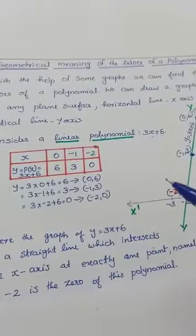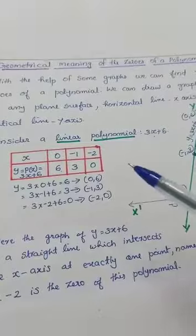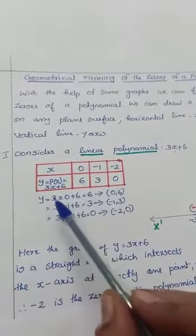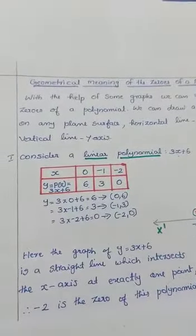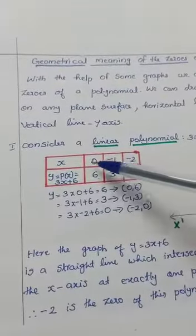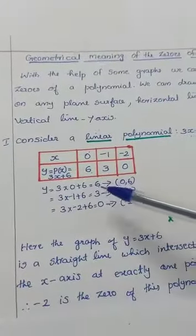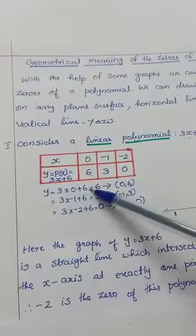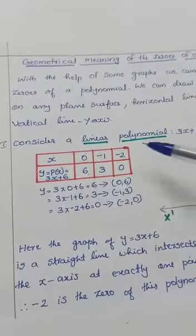Let us take the value for x on the x-axis and the entire polynomial 3x plus 6 on the y-axis. When x equals 0, y equals 3 times 0 plus 6 equals 6. When x equals negative 1, y equals 3 times negative 1 plus 6 equals 3.